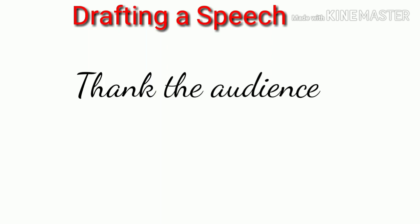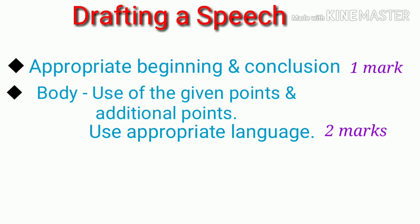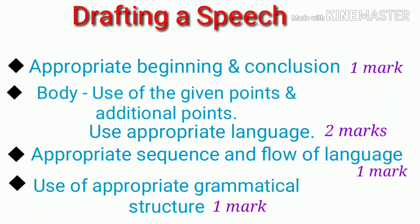Yaha kruti prakara saati gunanchi vibhaagni ashayasel: appropriate beginning and conclusion — yogya suruvat waw shivat — one mark. Body: use of the given points and additional points, use appropriate language — dililaya mudhyaancha waw anki kahi mudhyaancha vaapar, tasaj bhasheche yogya vaapar — two marks. Appropriate sequence and flow of language — yogya kram aani oghavuti bhasha — one mark. Use of appropriate grammatical structure — yogya vyaakran rachanancha vaapar — one mark. Ase sarvamilun paach gunan saati haa prashna vicharla jato.